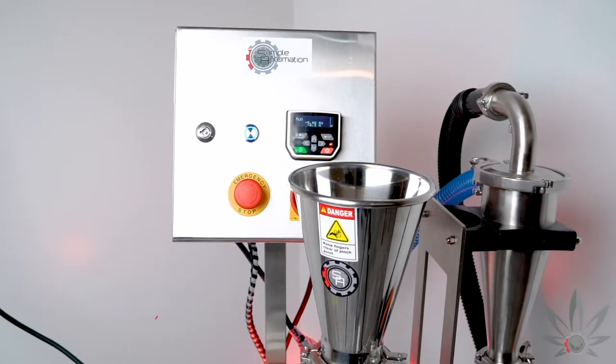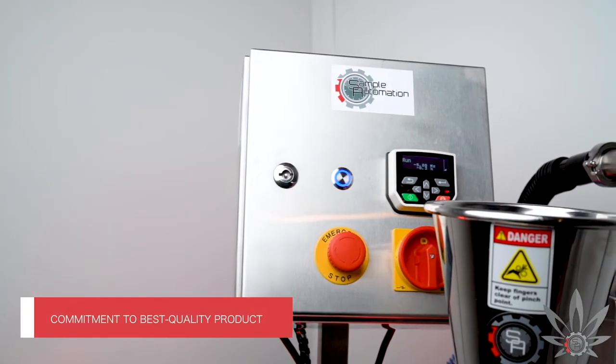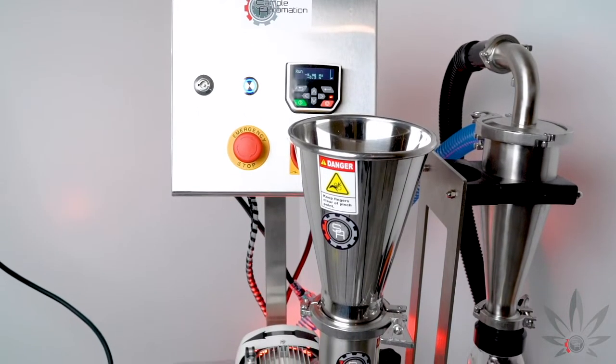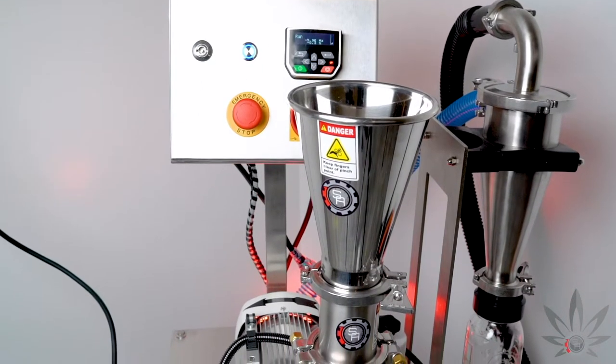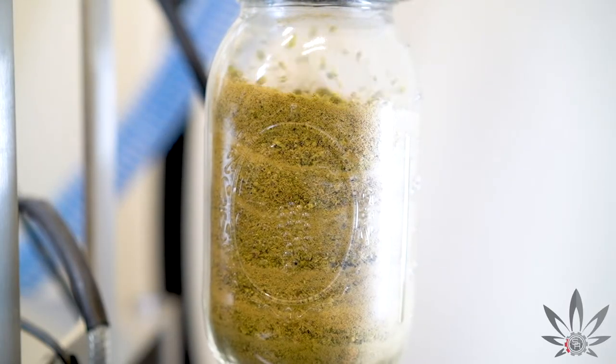Sample automation is committed and constantly striving to put out the best quality possible. Nevertheless, depending on your selected parameters and given the varieties that often exist in processing materials, we would still suggest using a sifter to remove any large flower or stems that may have found their way through.